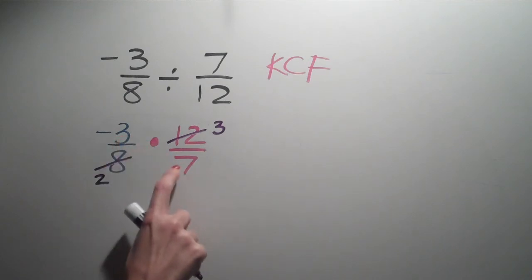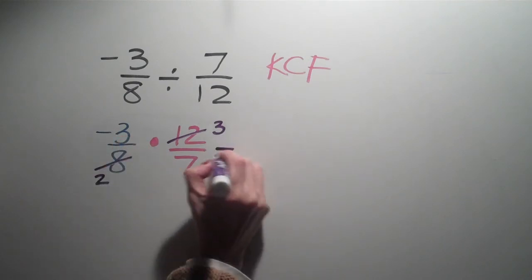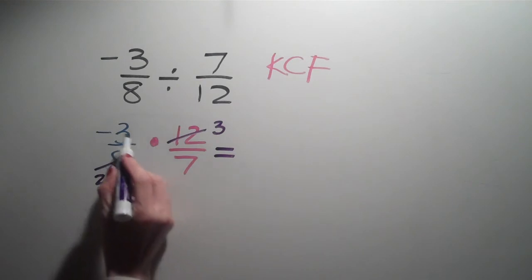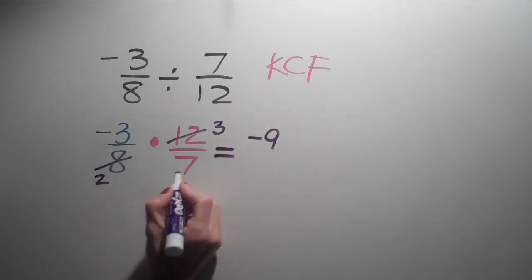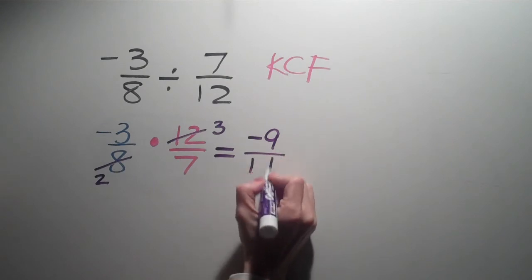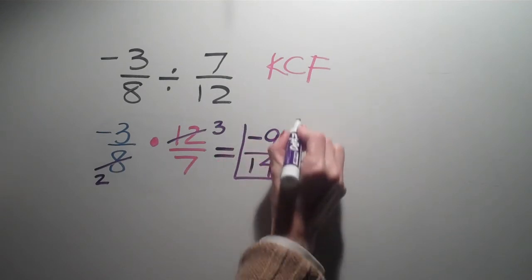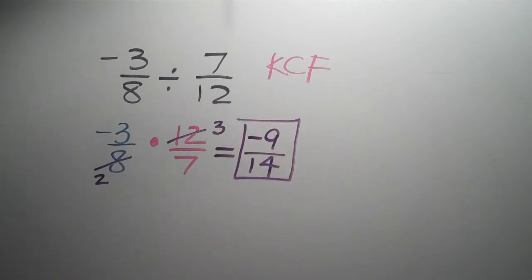I can't do anything with the 3 and the 7, so I'm just going to multiply straight across. Negative 3 times 3 is negative 9, and 2 times 7 is 14. So there's our answer, negative 9 over 14.